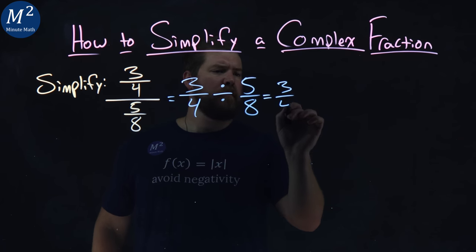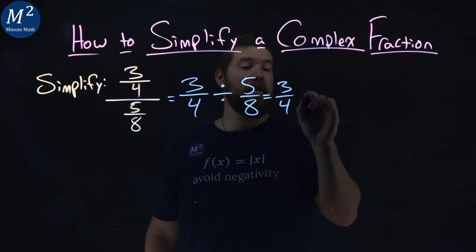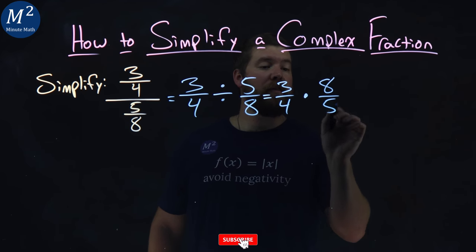Now three-fourths divided by five-eighths is the same thing as three-fourths multiplied by eight-fifths, the reciprocal.